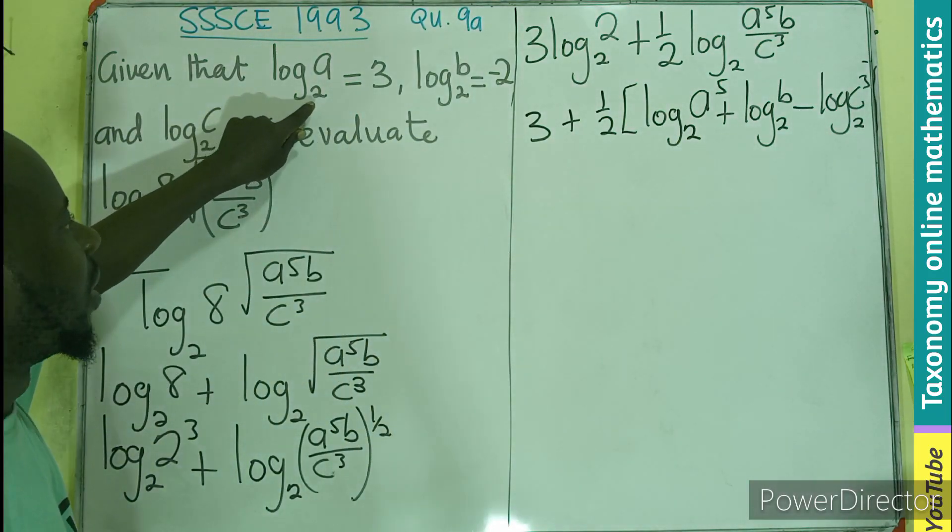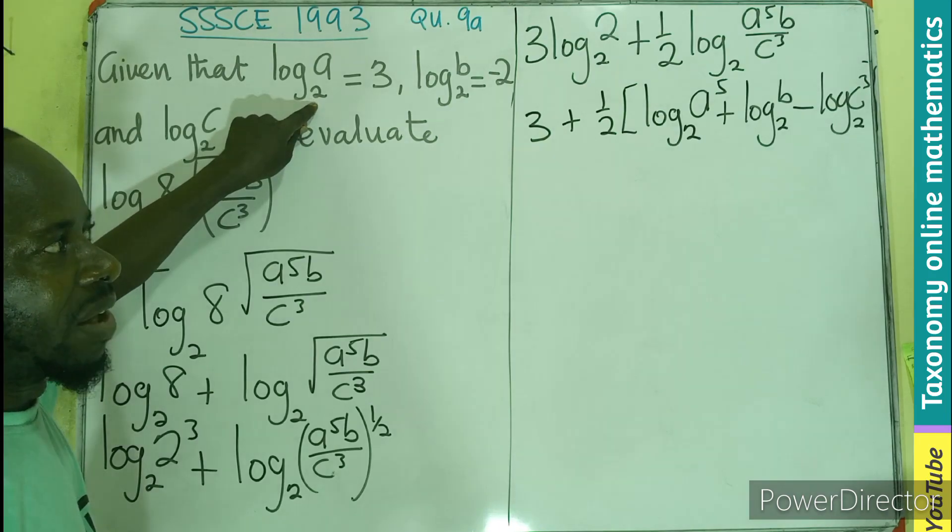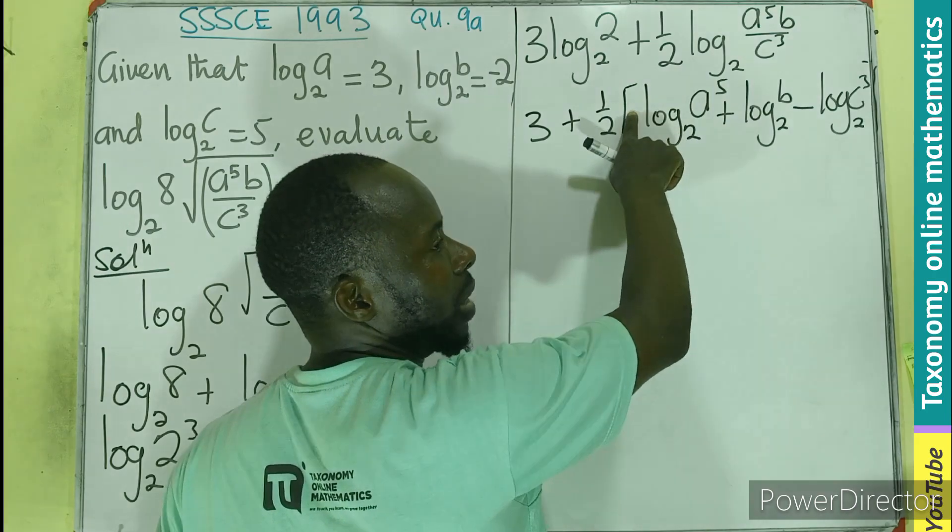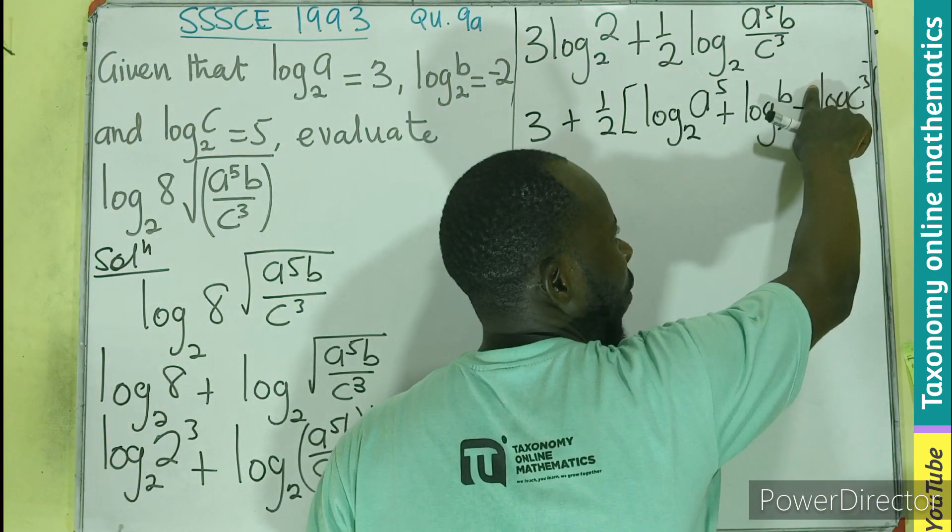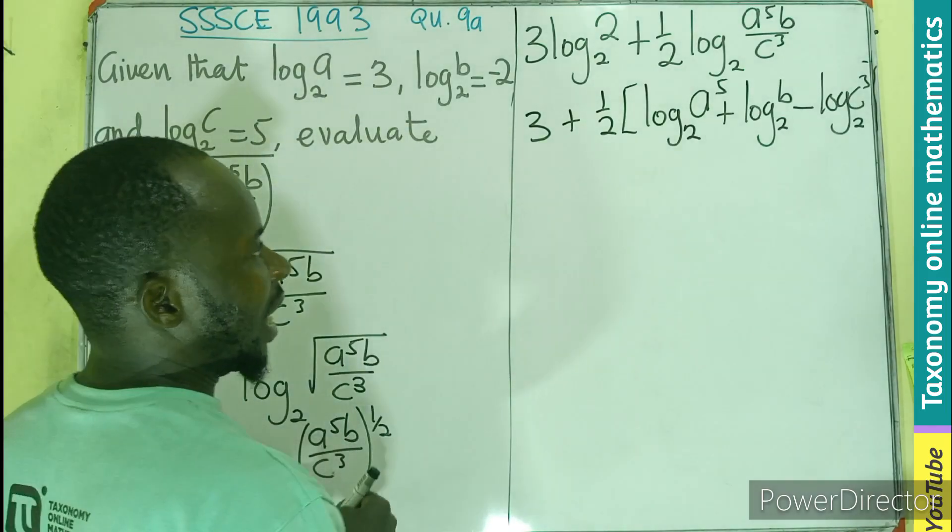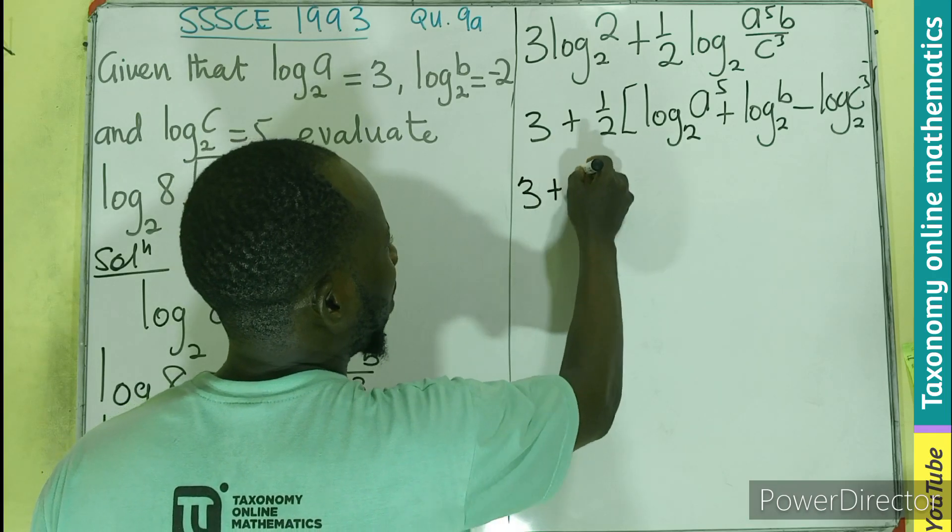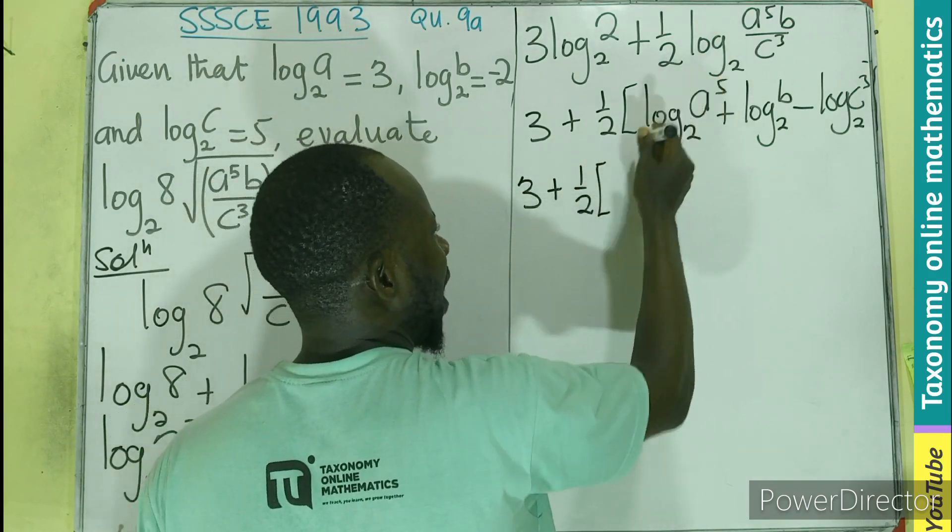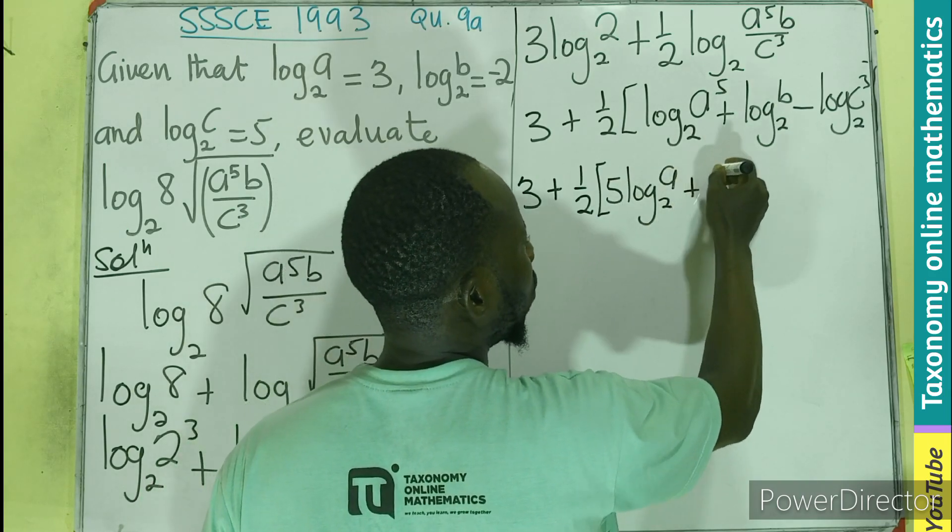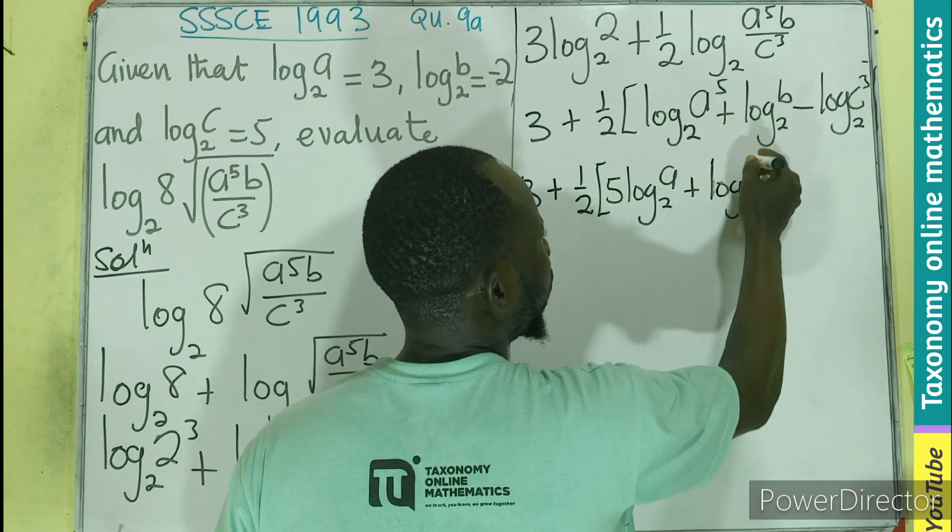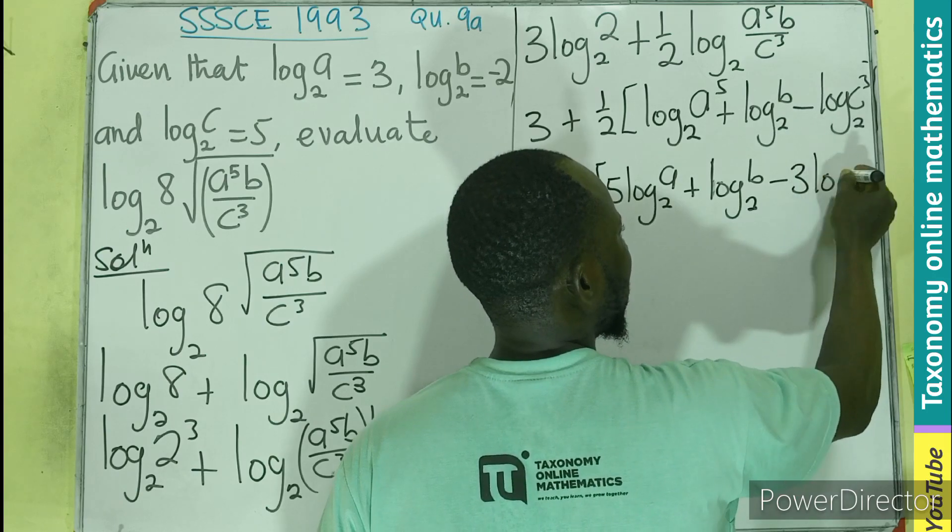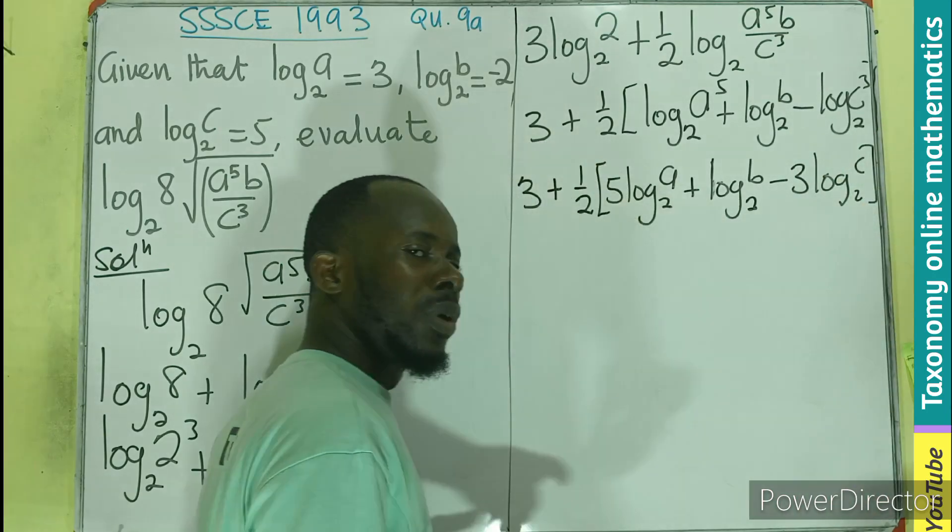You can see we have log A. You are aware that this 5 can come forward to multiply. This 3 will also come forward to multiply to give you only log A, base 2, which will give you 3. So let's rewrite that as 3 plus 1 over 2, the 5 is coming to multiply the log of A, base 2. The log of B, base 2, minus the 3 is coming to multiply the log of C, base 2.